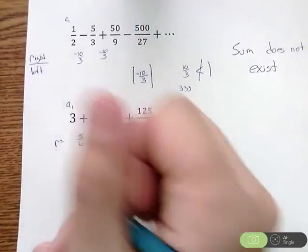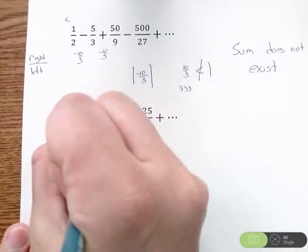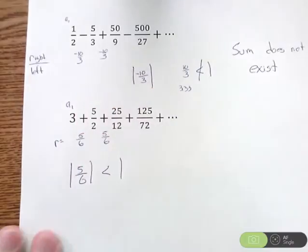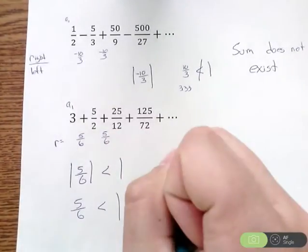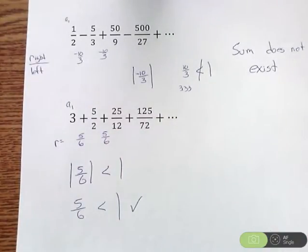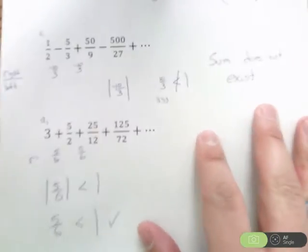So again, we have to check: make sure the absolute value of R is less than 1. Well, the absolute value of 5/6 is 5/6. So is 5/6 less than 1? Sure is. So that works, and we can plug into the formula.